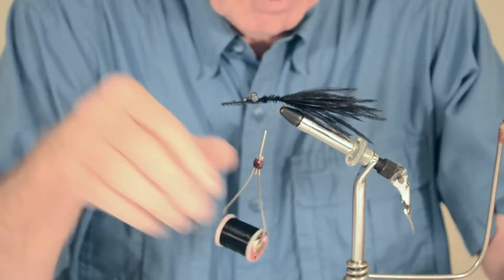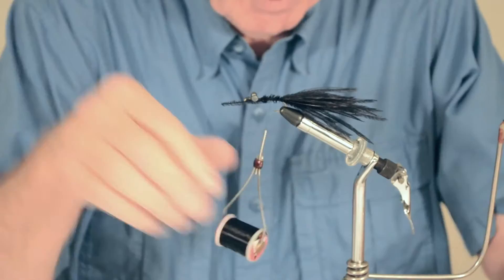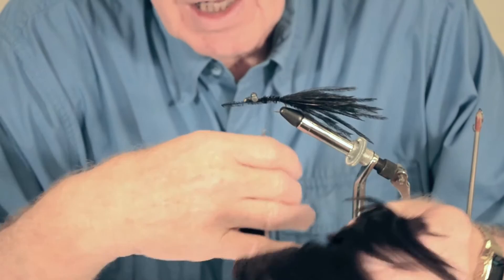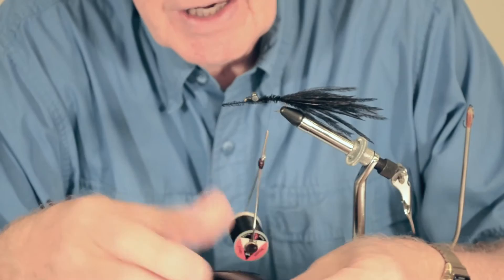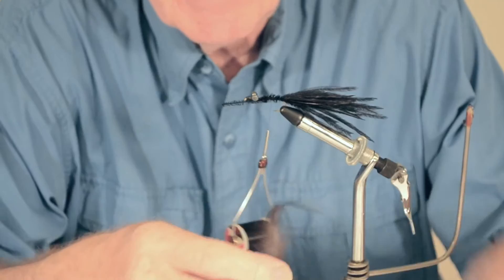Then we're going to palmer this with black hackle. The helgrammite we sell, we do them in olive and brown, but the black's pretty hard to beat. I'm using a neck here because the fibers are wider. You can use a saddle if you want to. A neck gives you nice, wide, soft, webby feathers.